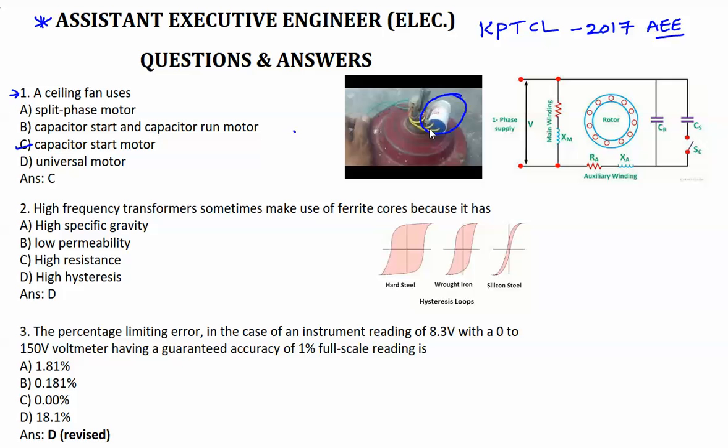Now you can ask where we'll use capacitor start and capacitor run motors. As you can see in this diagram, we have auxiliary winding and main winding. Here we have two capacitances - one is for running condition, second one is for starting condition. In case of capacitor start motors, there is no capacitor for running conditions. For power factor improvement, we will use running capacitors.